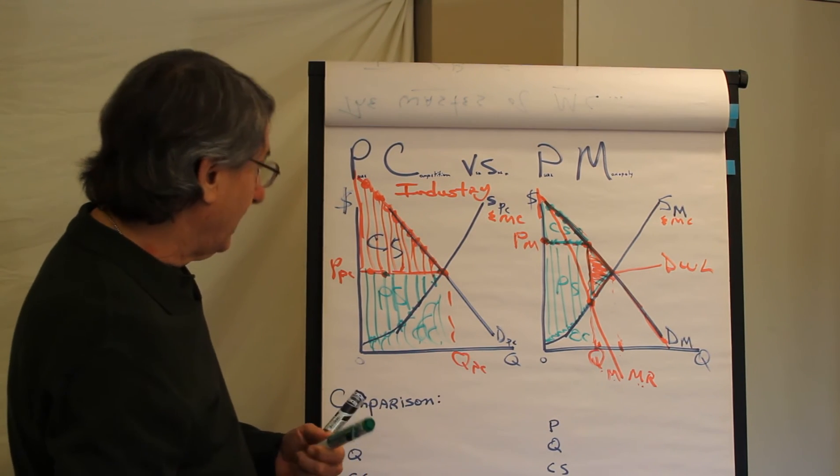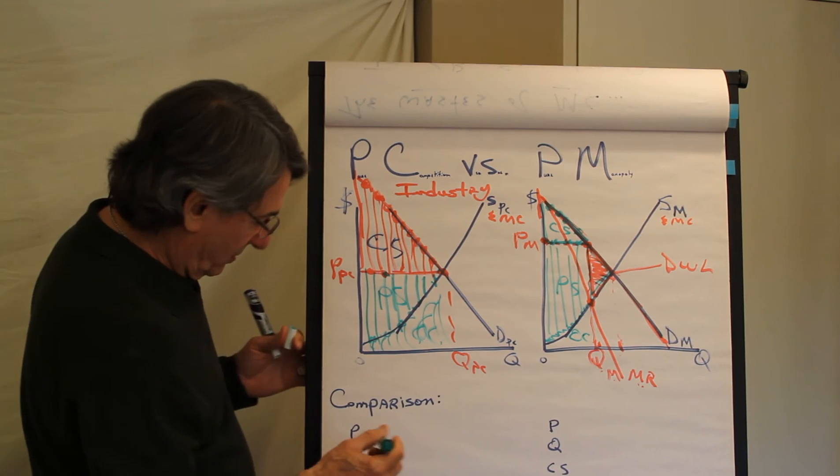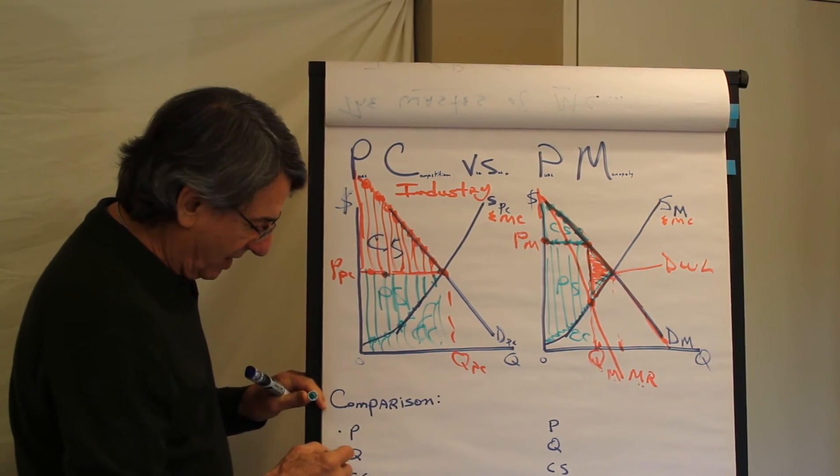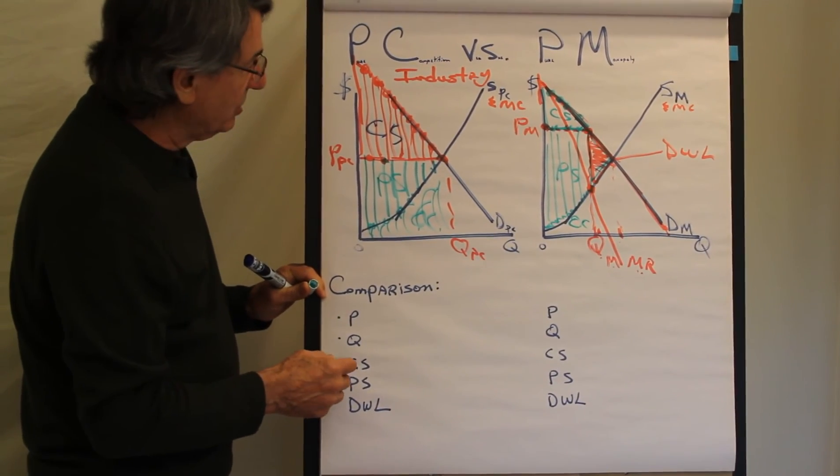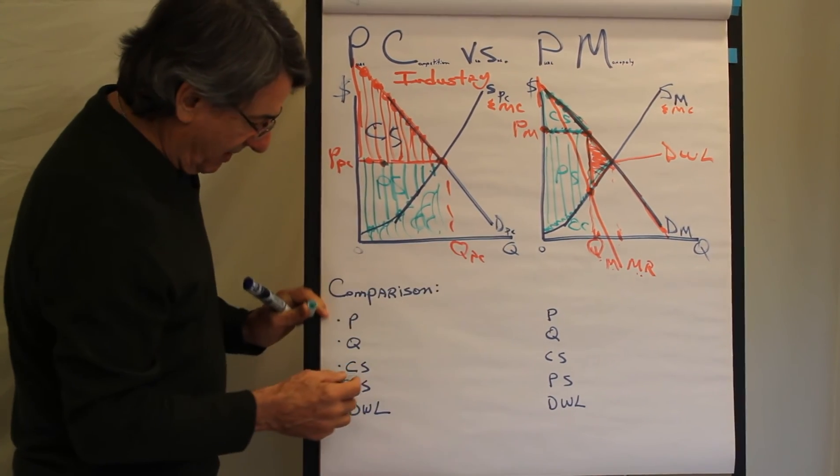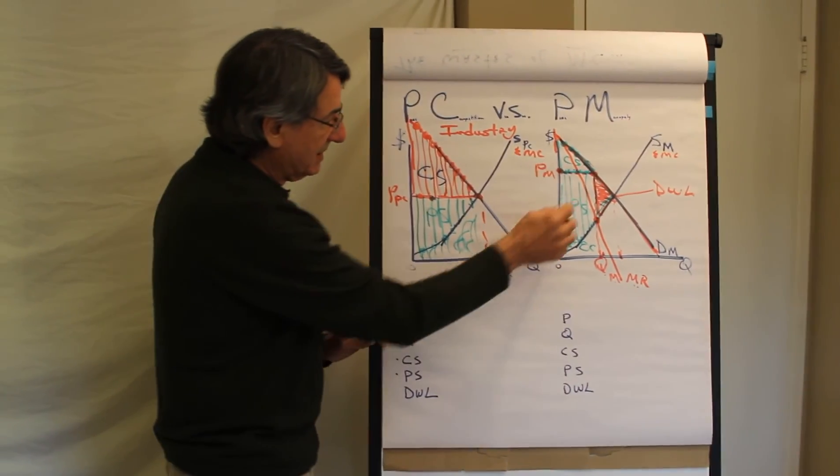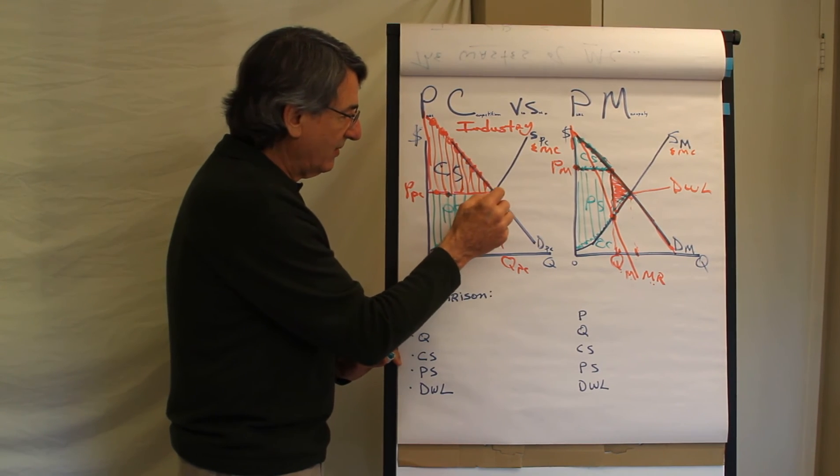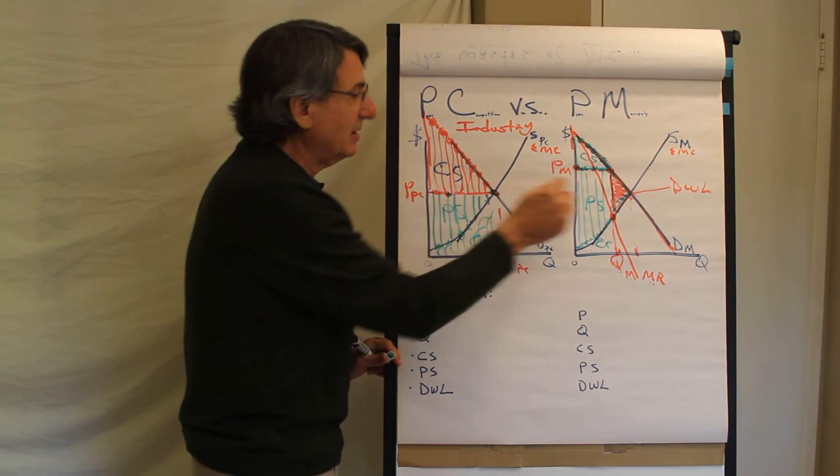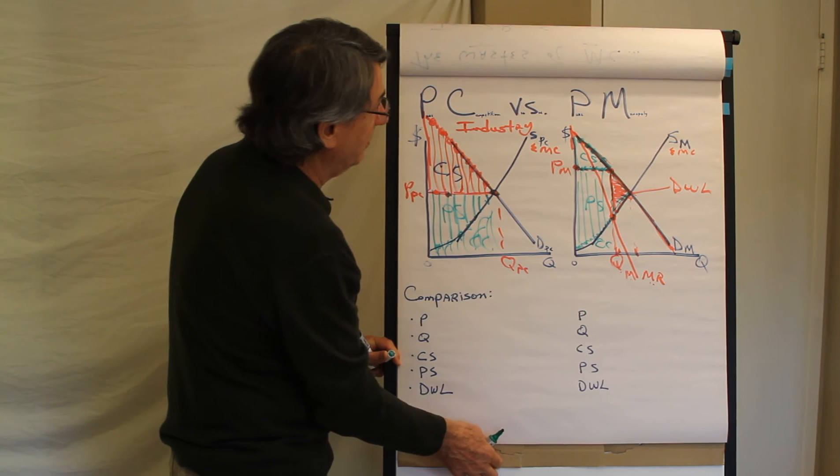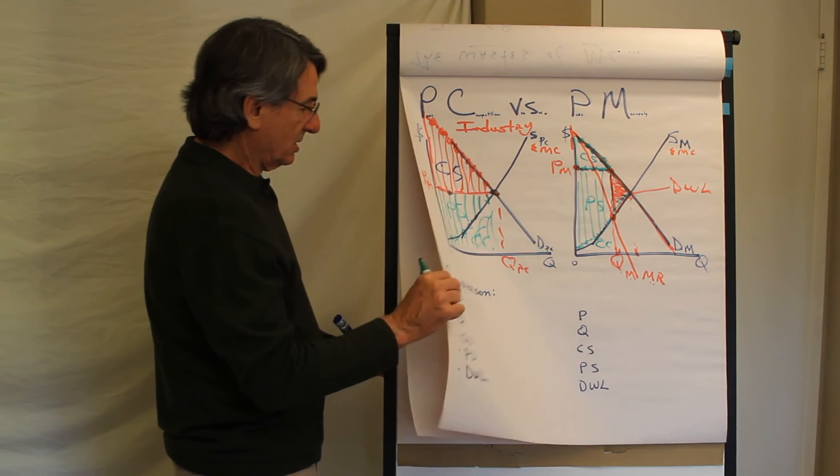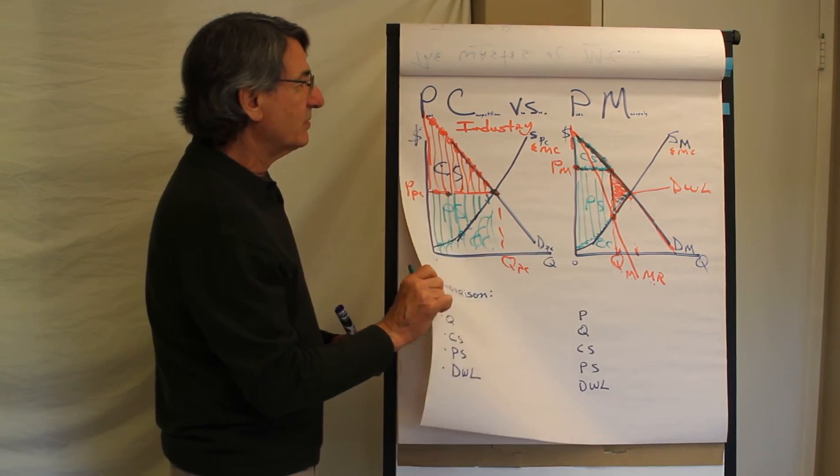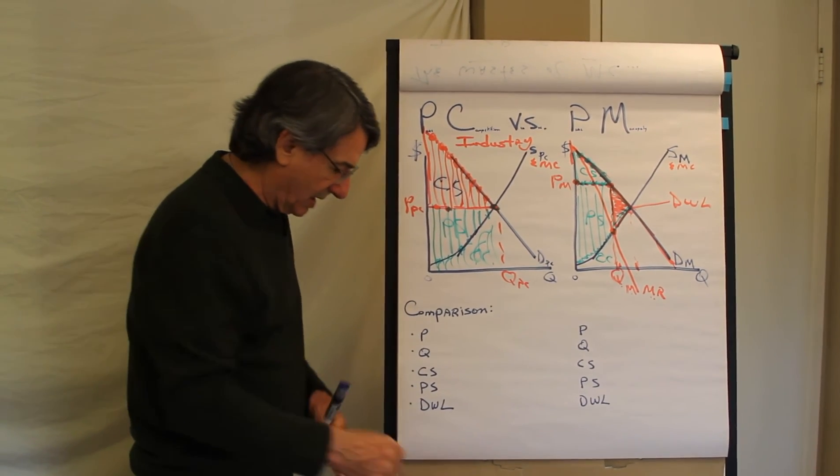So how do monopolies compare with purely competitive industries based on price? It's higher. Quantity? It's lower. Consumer surplus gets smaller with monopolies. Producer surplus gets larger with monopolies. And is there deadweight loss? No deadweight loss in pure competition, but in pure monopoly? Yes, there is. So there we have it. The difference between pure competition and pure monopoly.